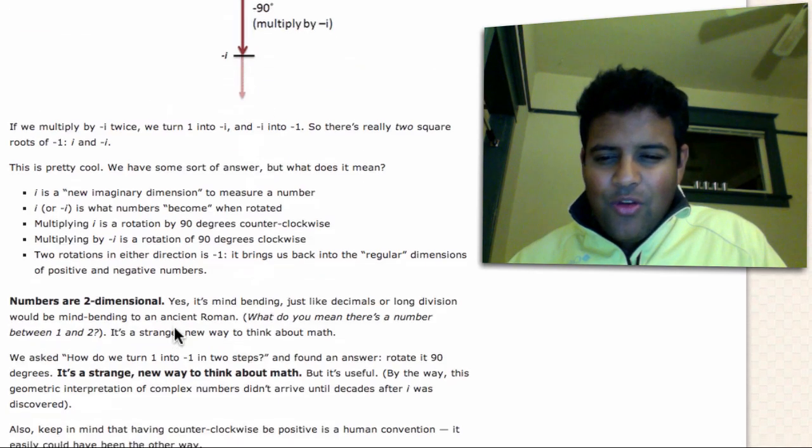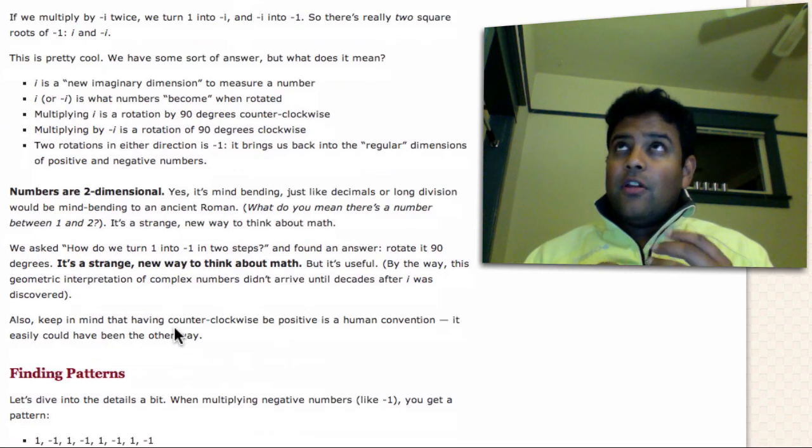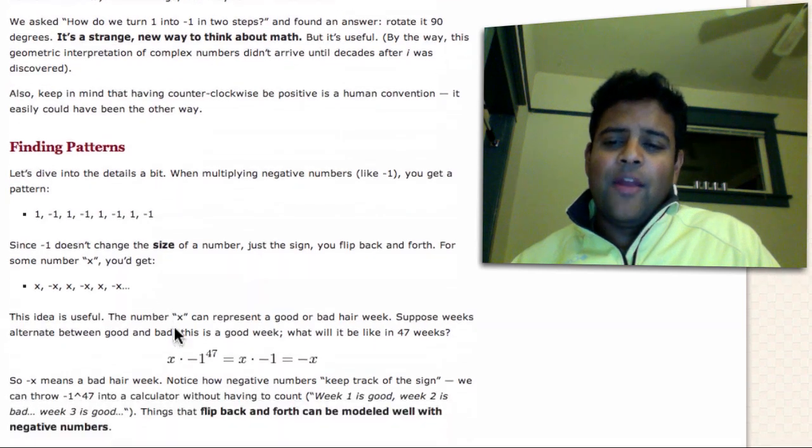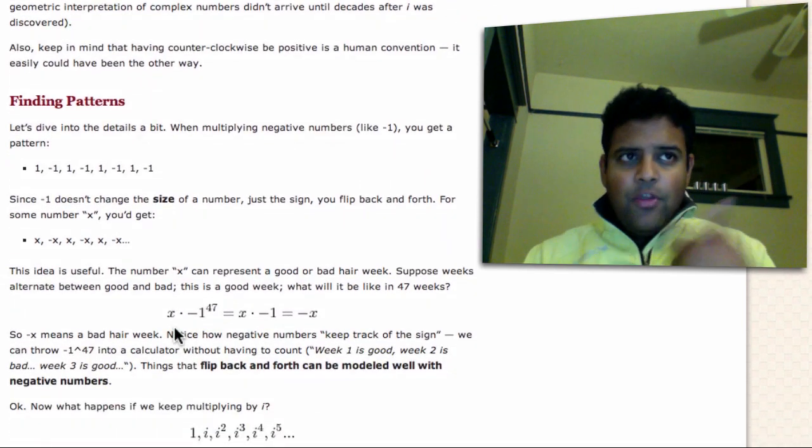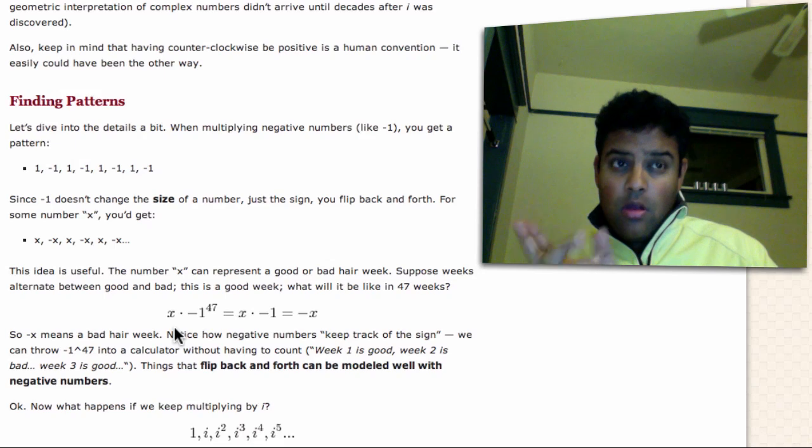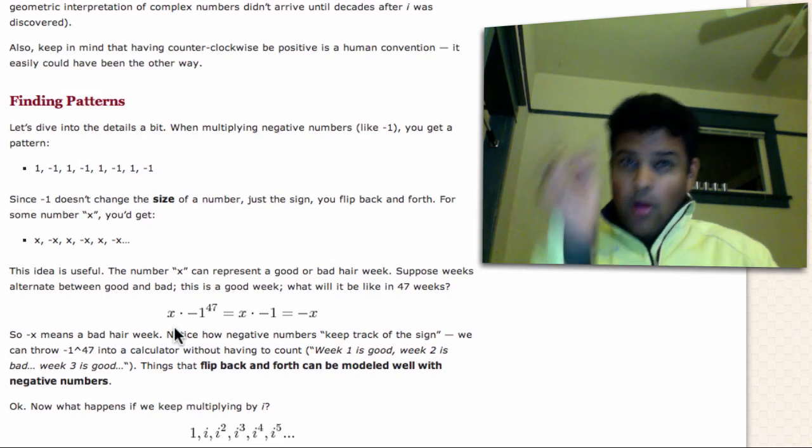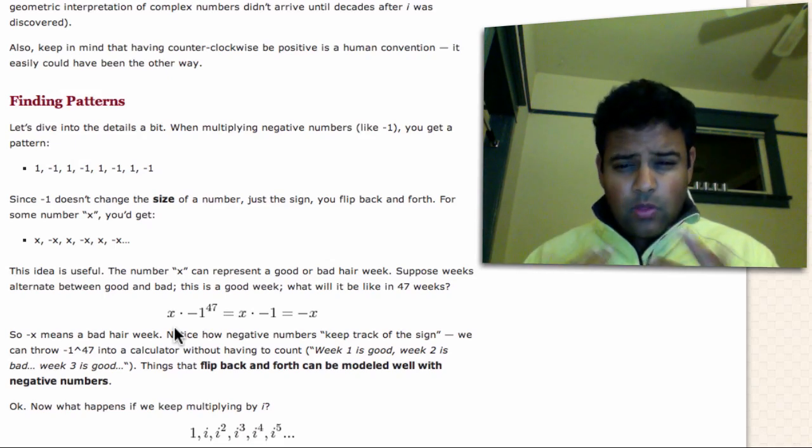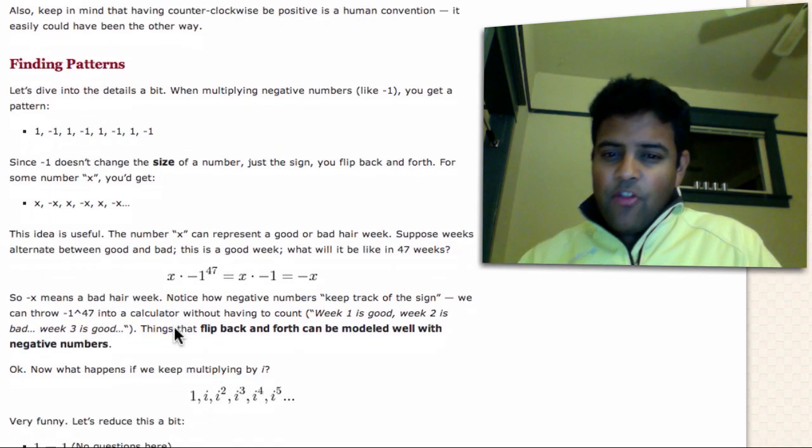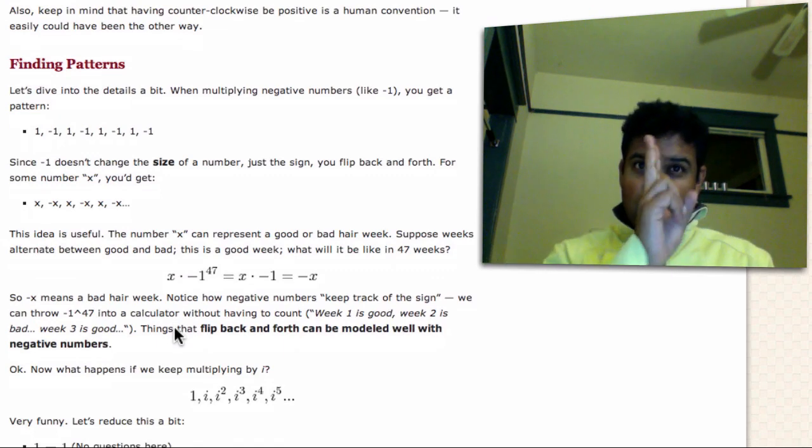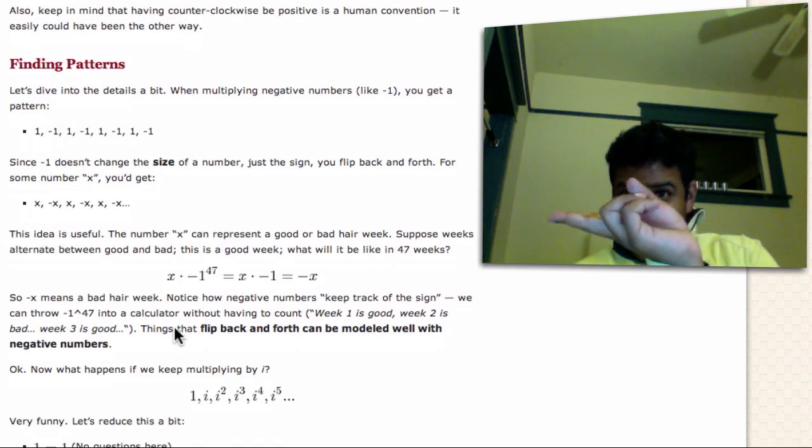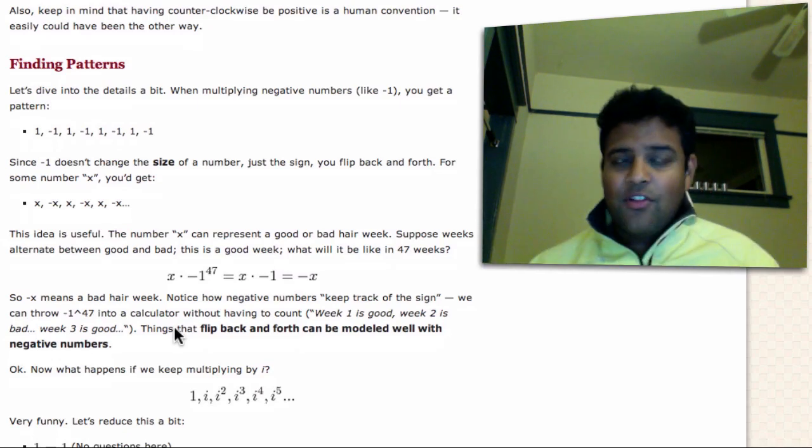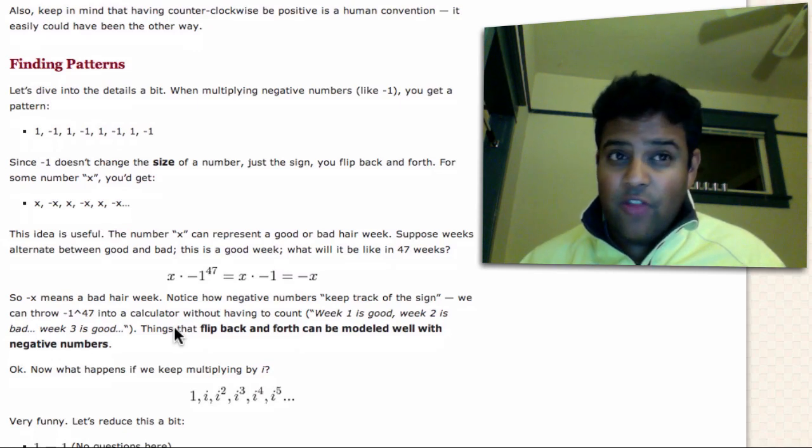So with this insight, what can we do? This is really the key kind of metaphor that you want to think about. Well, one of the first things you can do is find patterns. So you might be aware that with negatives, if you keep multiplying them, they kind of toggle back and forth, right? So you have one, negative one, one, negative one, one, negative one. It kind of toggles back and forth. With i, something similar happens. You start rotating. So you have one, i, i squared, i cubed, i to the fourth. Oh, you're back to where you started.